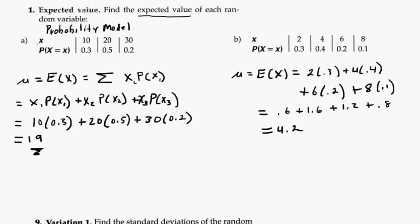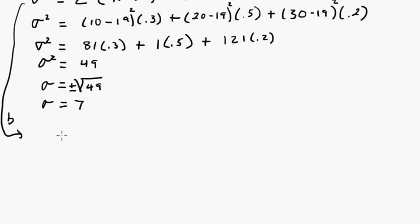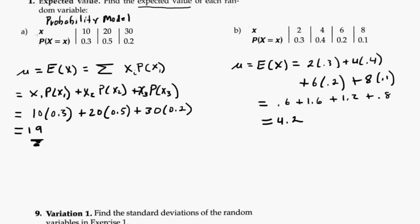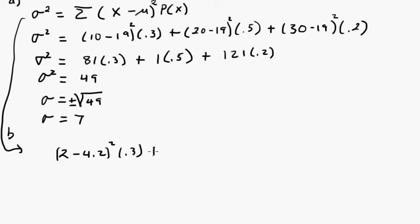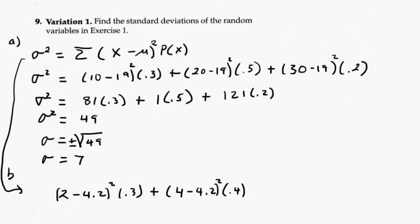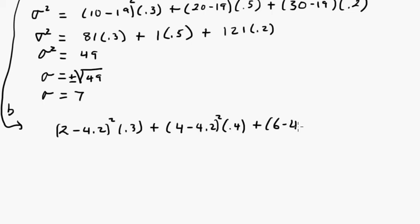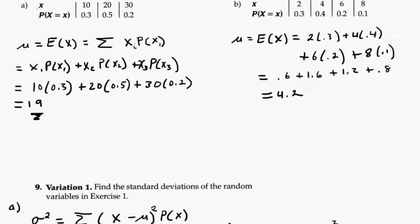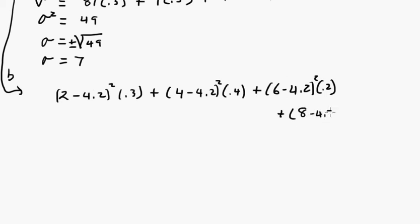So let's see. B was 2, 4, 6, and 8. So 2 minus 4.2 squared times the probability. So 0.3 plus, I think it was 4 minus 4.2 squared times 0.4. Now 6 and 0.2. So plus 6 minus 4.2 squared times 0.2. And then plus the last one was 8. 8 minus 4.2 squared times 0.1. So this is going to be the variance squared.